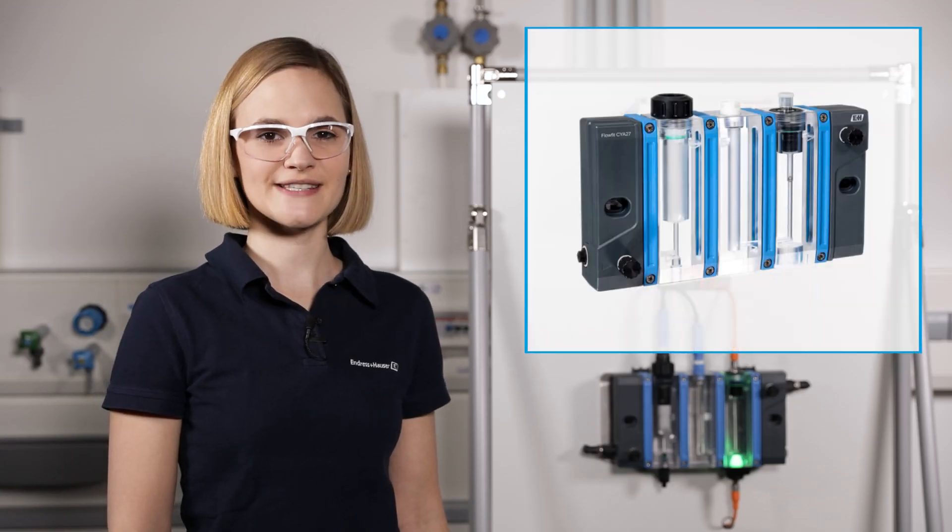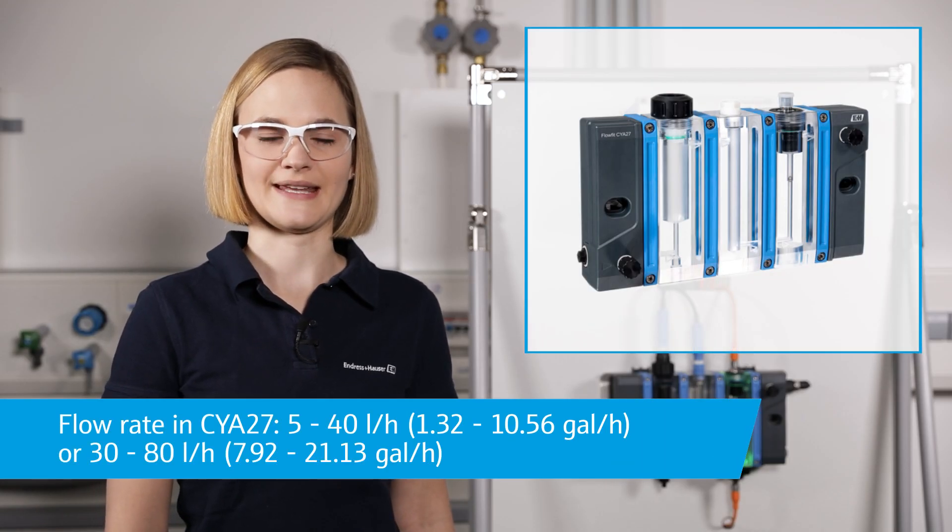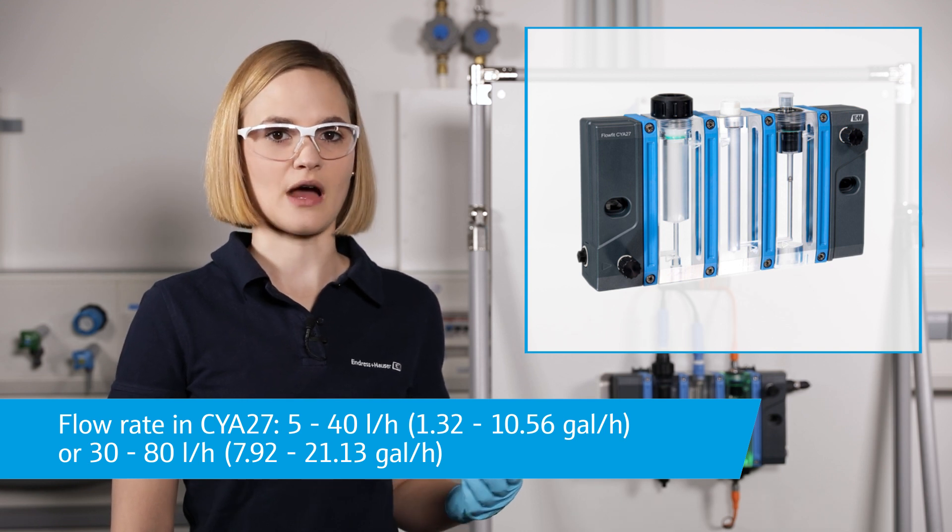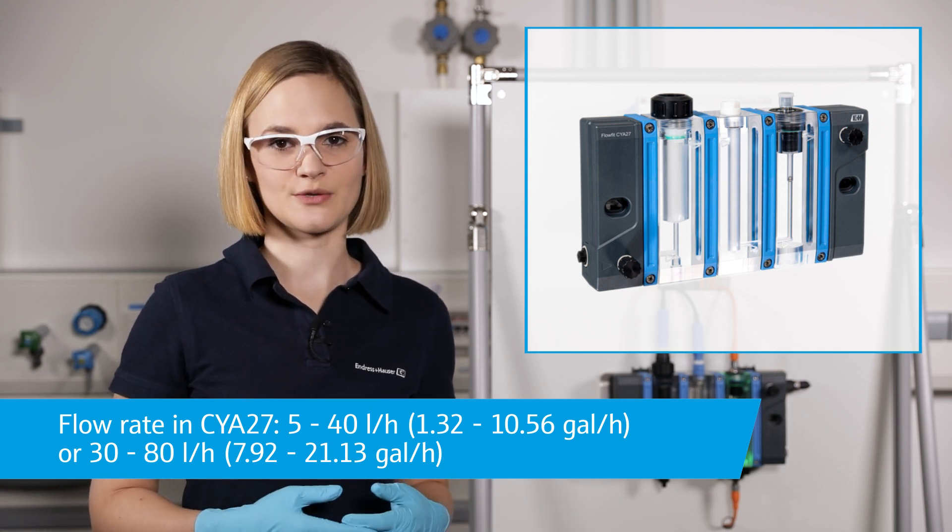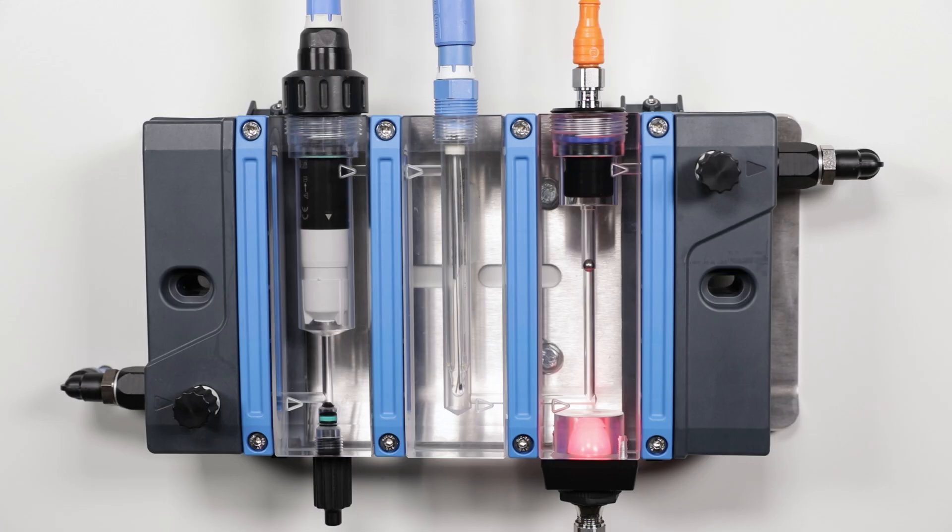Mounted in this flow assembly the flow rate must be at least 5 liters per hour or 30 liters per hour depending on the CYA27 version. Adjust the flow rate with the needle valve at the inlet module while the outlet valve is constantly open.